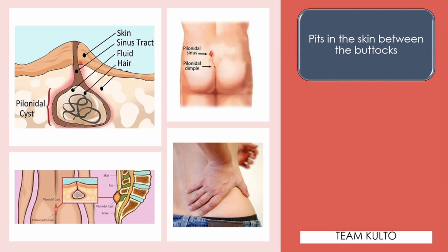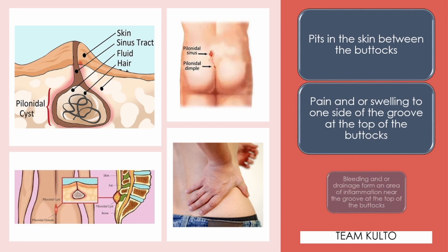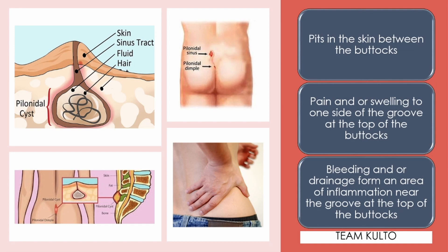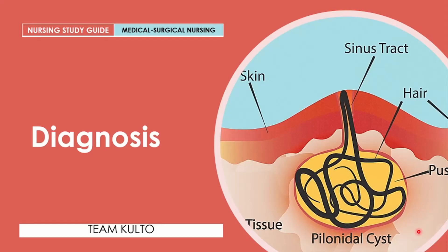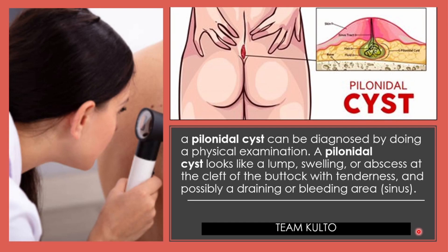Signs and symptoms include: pain in the skin between the buttocks, pain and/or swelling to one side of the groove at the top of the buttocks, and bleeding and/or drainage from an area of inflammation near the groove at the top of the buttocks. Doctors diagnose a pilonidal cyst by first doing a physical examination. When you see a lump, swelling, or abscess at the cleft of the buttock with tenderness and possibly draining or bleeding in that area, you can actually suspect pilonidal cyst.